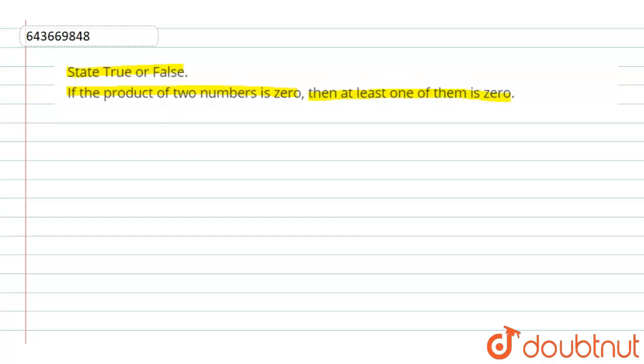So here we have the question given. If we multiply two numbers and their product is zero, then I have said that one of them is zero.